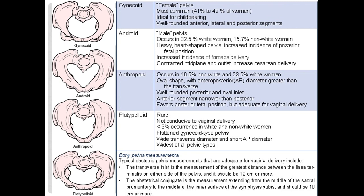The gynecoid pelvis — from the root word 'gyne' — is the most common type of female pelvis and the most ideal shape for childbearing, with well-rounded anterior, lateral, and posterior segments. The android pelvis is male-shaped, heart-shaped, and has an increased incidence of posterior fetal position; it features a contracted midplane and contracted outlet, increasing the likelihood of cesarean section delivery.